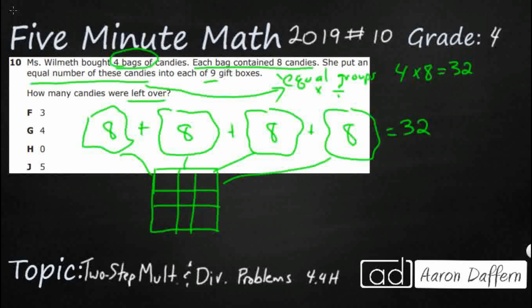I've got 32 candies and I need to put them into these nine gift boxes, but there have to be an equal number. So I need to think 32. Let's go ahead and divide that by nine. And let's see what we get with that. Now, 32 doesn't go evenly divided by nine. So let's use our long division.